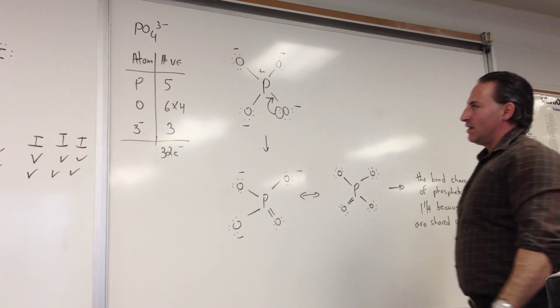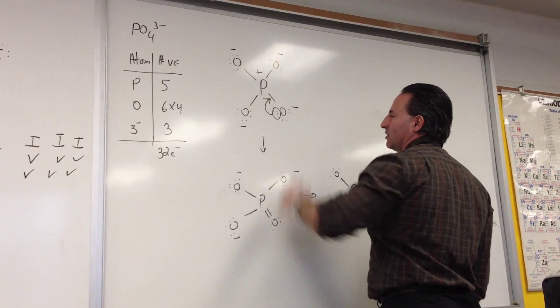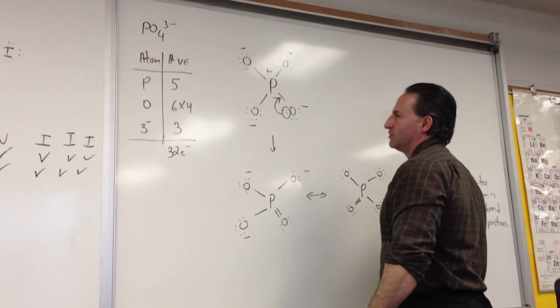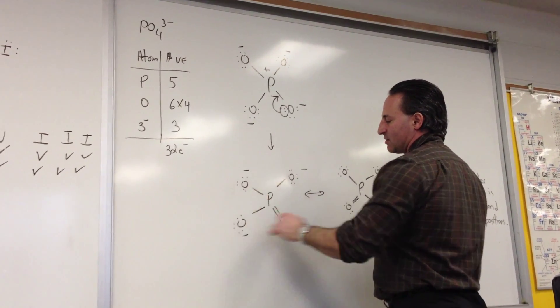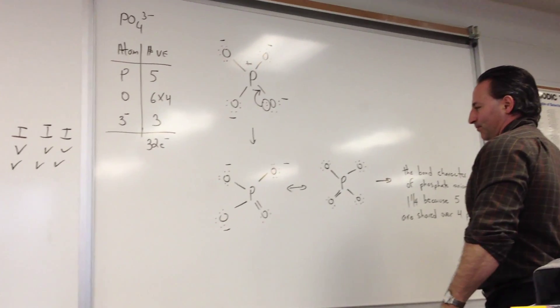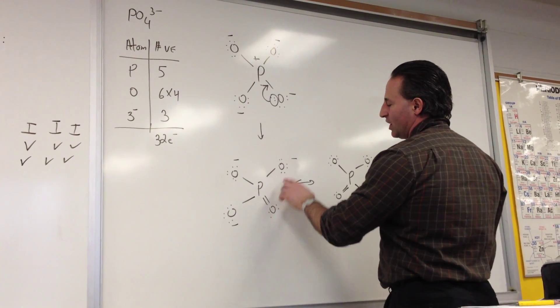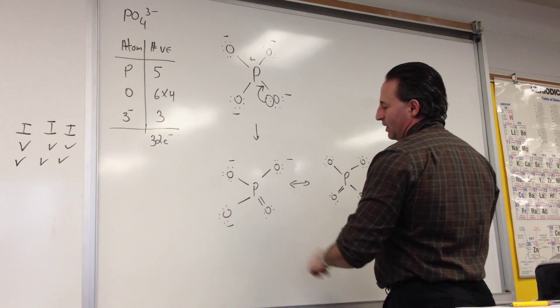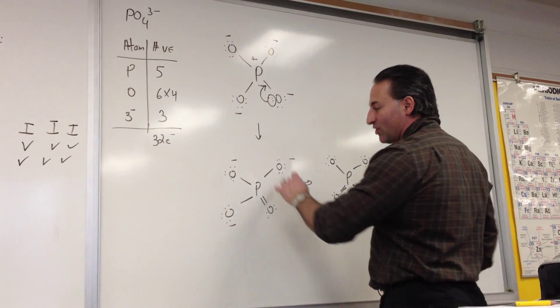So what we do to remedy that is we take one of the lone pairs on the oxygen and we shift it down as a bonding pair. From lone pair we turn it into a bonding pair. And this is the molecule that we propose as the Lewis structure for phosphate. And what happens is this oxygen loses its formal charge and these three remain the same. And what ends up happening is that phosphorus has an expanded octet. So it has more than 8.